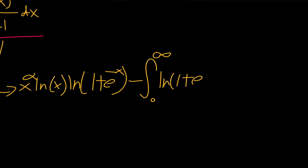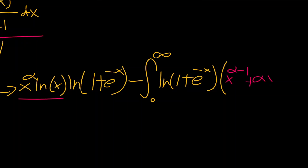We'll factor out 1 plus e to the minus x and then multiply by the derivative of x to the alpha times the natural log of x. That gives us x to the alpha over x, which is x to the alpha minus 1, and then plus the natural log of x times the derivative of x to the alpha, which is alpha times x to the alpha minus 1 times the natural log of x.